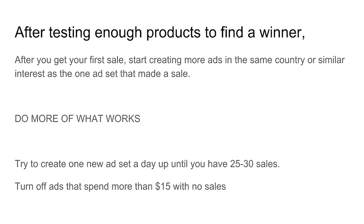After testing a bunch of products, you finally get your first sale. Use the breakdown tab to see what country the sale came from — if it was Canada, make another ad targeting only Canada and see how that performs. The idea is to do more of what works. If you have a winning product, try to create one new ad set per day up until you have 25 to 30 sales. With a real winner, this shouldn't take more than two to three weeks.